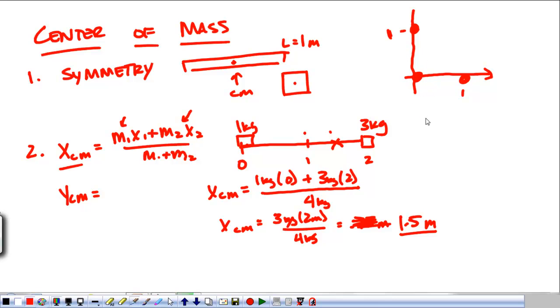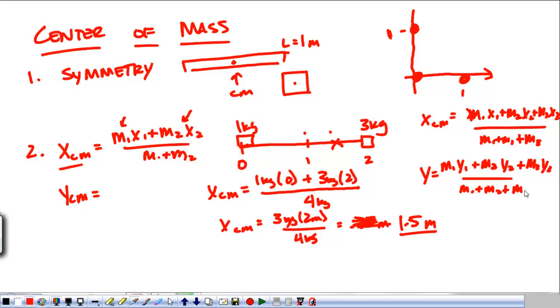We would find the x center of mass by plugging in their locations: m1x1 plus m2x2 plus m3x3, all over m1 plus m2 plus m3, and then doing the same thing in the y direction: m1y1 plus m2y2 plus m3y3, all over m1 plus m2 plus m3.